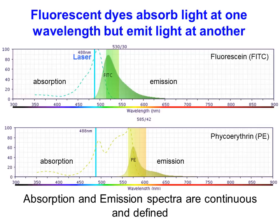In this image we have the absorption and emission spectra of two fluorescent dyes. The first is fluorescein, or FITC, and the second is phycoerythrin, or PE. Phycoerythrin is a protein versus fluorescein, which is a small molecule. On the x-axis is the wavelength of light, starting at about 300 nanometers and going to 900 nanometers.